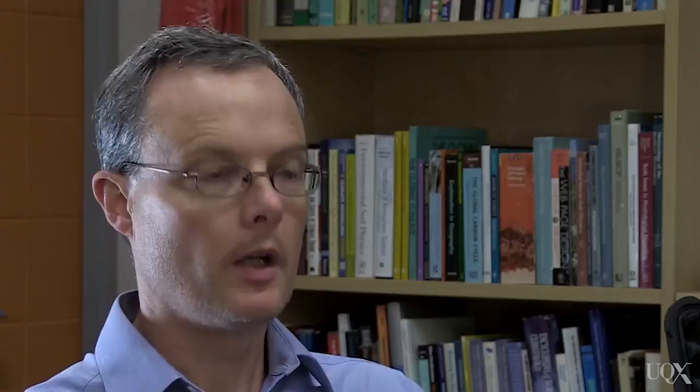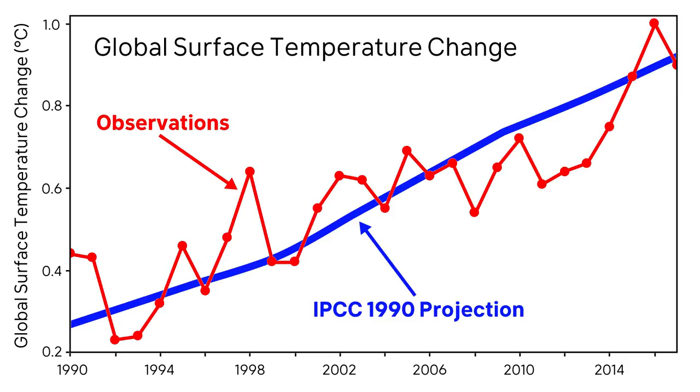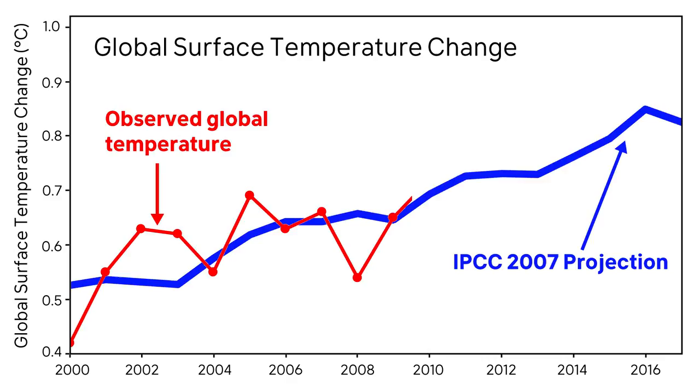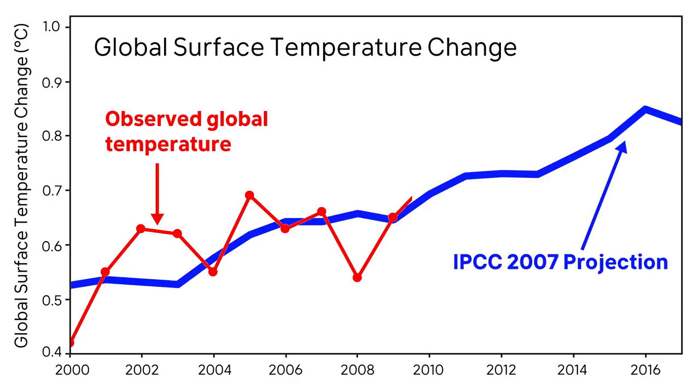Thirdly, we routinely test our models against observations over the last century and earlier, and they do extremely well. Finally, we can test our models against perturbations — for instance, we can simulate a volcanic eruption and check that climate models respond appropriately to what a volcano does to the atmosphere. So there are multiple lines of evidence, and they all point to climate models being reliable for what they were designed to do.